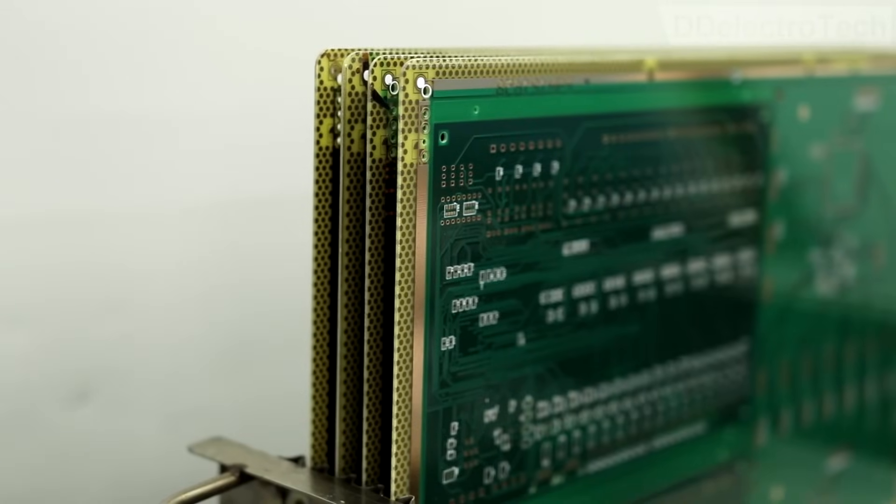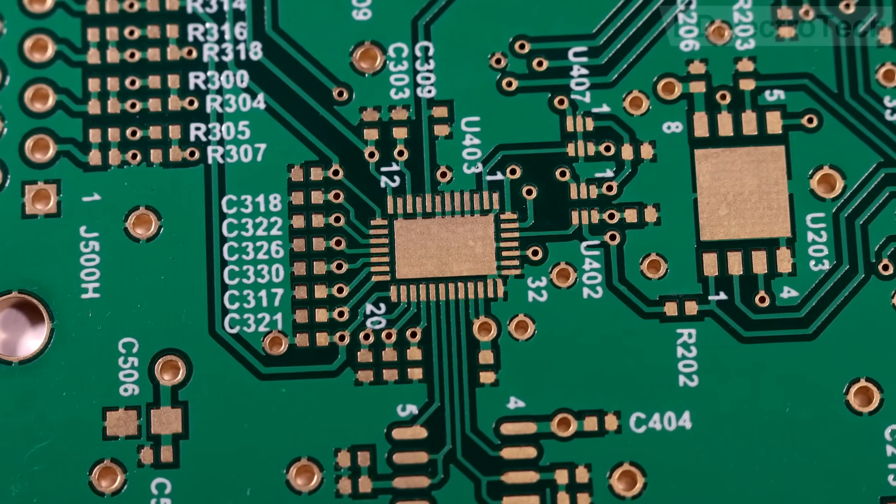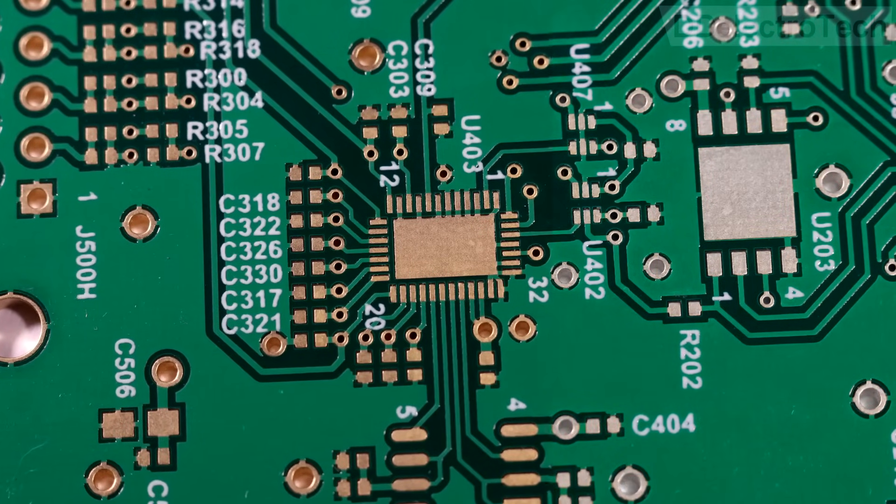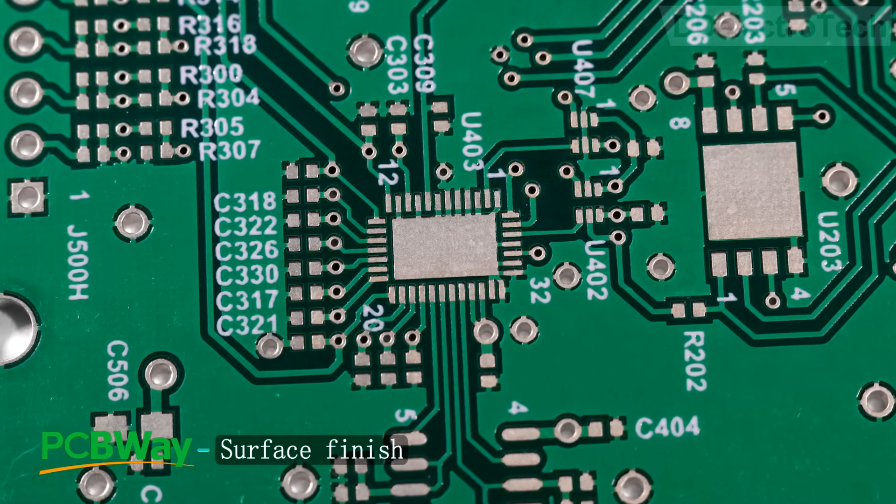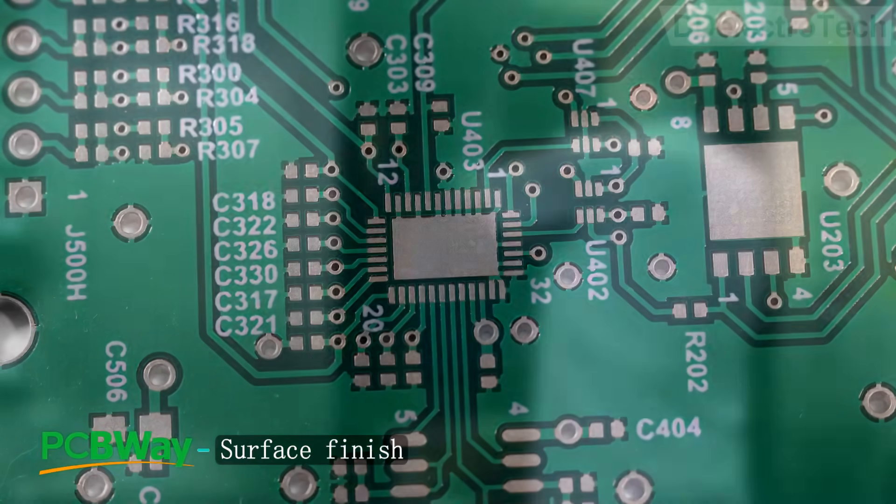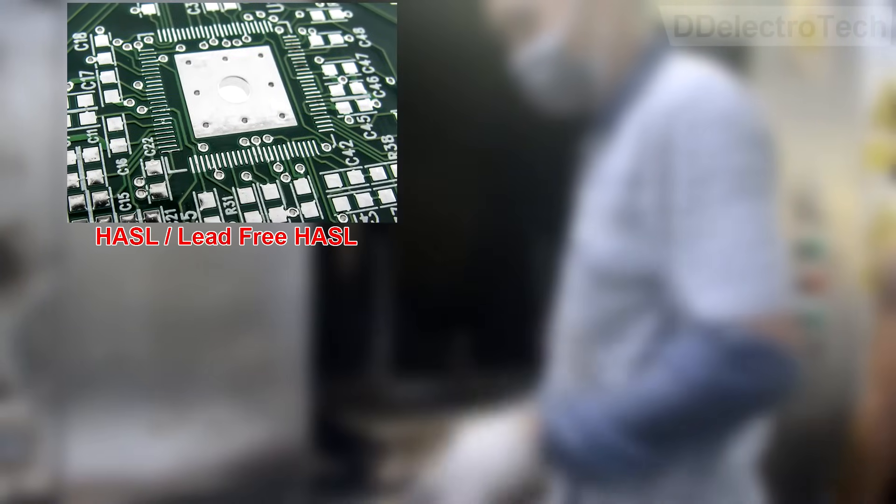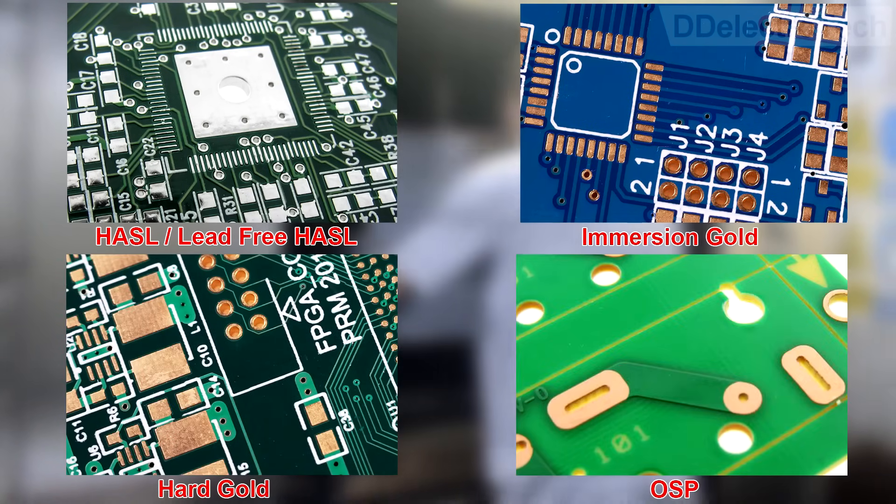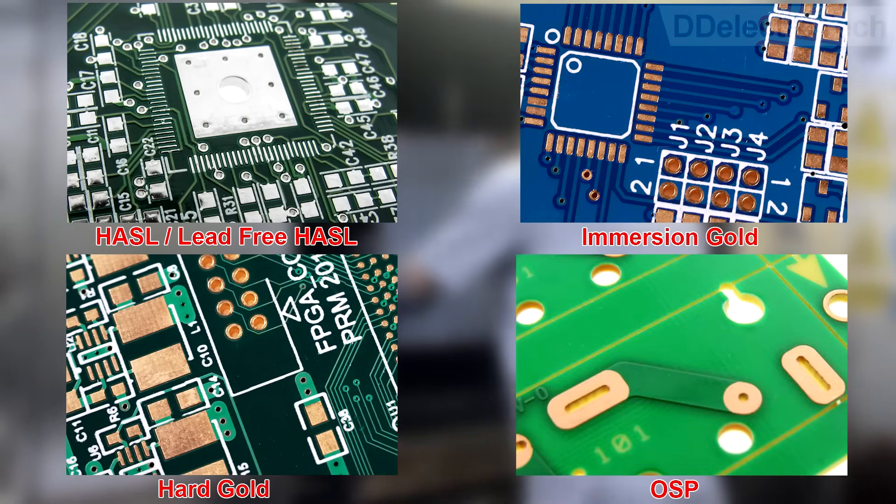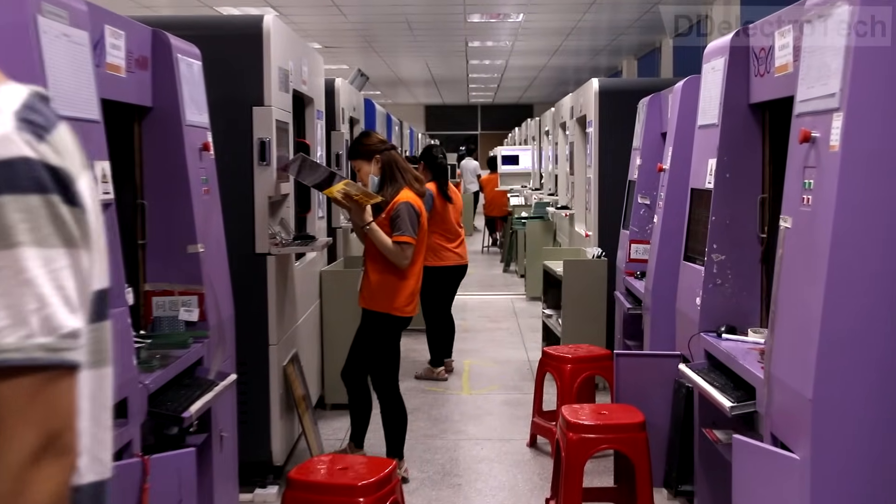To protect the copper of solder pads from oxidation, hot air solder leveling is often chosen as the surface finish method for circuit boards. In addition to the usual HASL, they also provide a variety of surface treatment methods such as immersion gold, hard gold, and OSP for customers to choose according to their needs. Finally, the PCB production process is done.